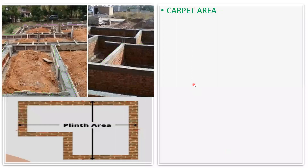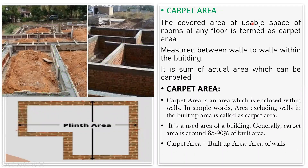Now we'll see what is carpet area. The covered area of usable space of a room at any floor is termed as carpet area. The carpet area is measured between walls within the building — it is the sum of the actual area which can be carpeted. The place where the carpet can be laid is called carpet area, meaning it is the area enclosed within the walls. In simple words, the area excluding the wall in the built-up area is called carpet area.